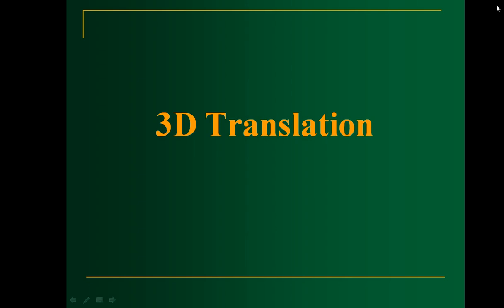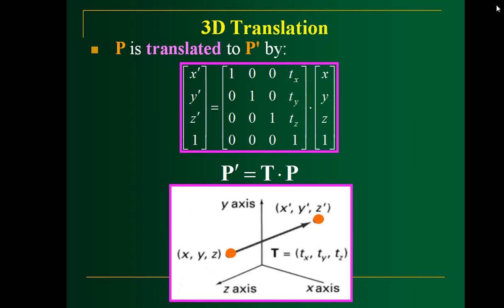Now let us move on to the individual transformations. Let me start with translation. You already know that translation means you are going to move an object from one location to another location, or one point to another point. The matrix shows the actual translation applied using the translation vector with distances Tx, Ty, and Tz. In simple terms, P' = T · P, where T represents the translation matrix, P represents the actual point in 3D space, and P' represents the translated point. This means x' = x + Tx, y' = y + Ty, and z' = z + Tz.